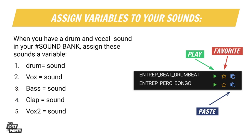Here's an example of what we're going to be doing. You're going to define at least five variables. You can have a vocal, a drum, some kind of bass, instrumentals, and maybe one vocal. Each one is going to have its own name and you're going to assign it to a sound. You're going to do this part in your code and I will show you how to do it.